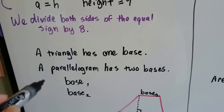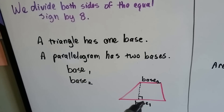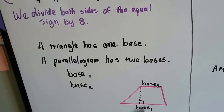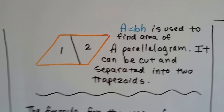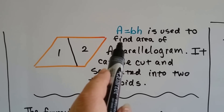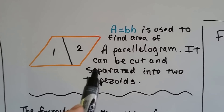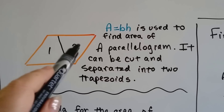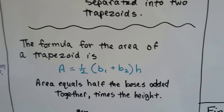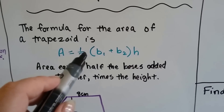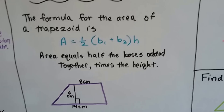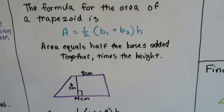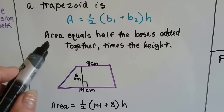A triangle has one base; a parallelogram has two bases, shown as base 1 and base 2. A parallelogram can be cut and separated — if we don't go quite to the vertex, we can turn a parallelogram into two trapezoids. The formula for the area of a trapezoid is: area equals half times base 1 plus base 2 times the height. So you add base 1 and base 2 together, multiply that by half, and then multiply by the height.